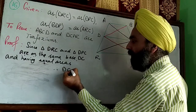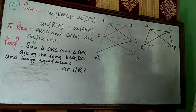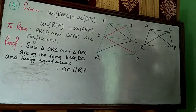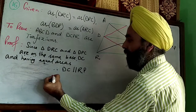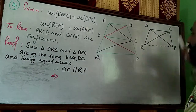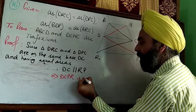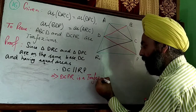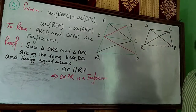We can say DC is parallel to RP. Therefore, DC is parallel to RP — that is, one pair of opposite sides is parallel. When one pair of sides is parallel, it becomes a trapezium. Hence, DCPR is a trapezium. We have proved that DCPR is a trapezium.